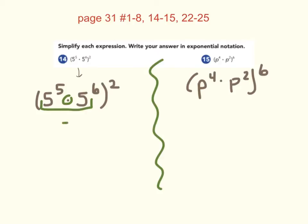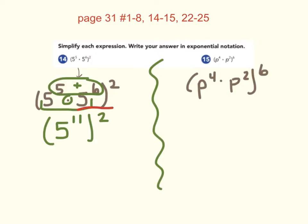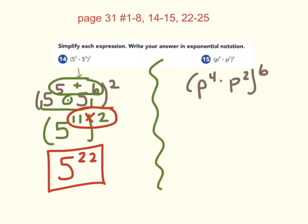The product rule says we keep the base and add the exponents: 6 plus 5, which is 11. Then I bring down the parentheses and the 2, and now I see we have the power rule. The power rule says we keep the base and multiply the exponents, so our final answer is 5 to the 22nd power.